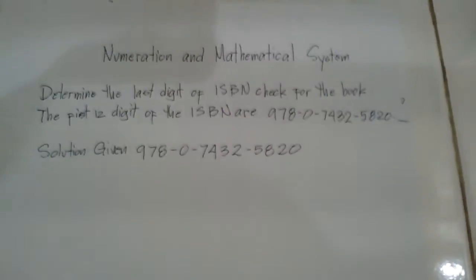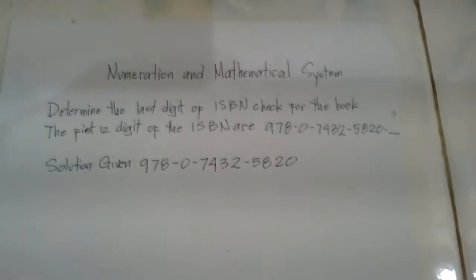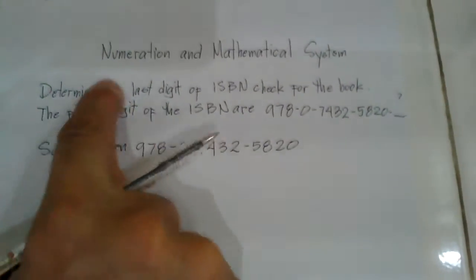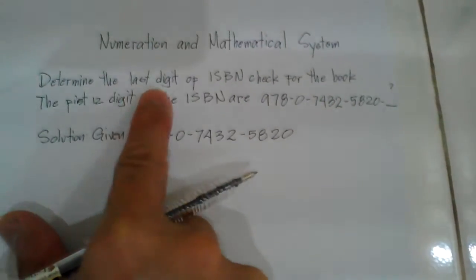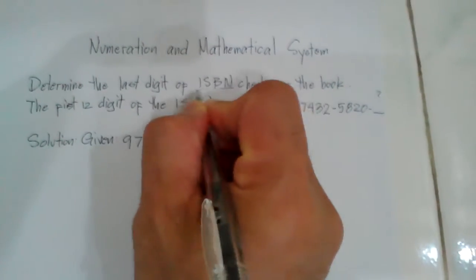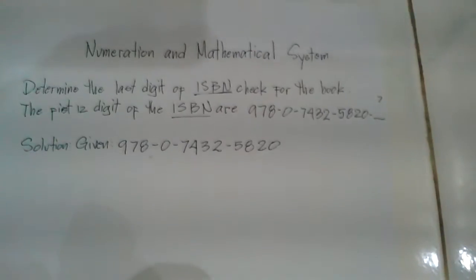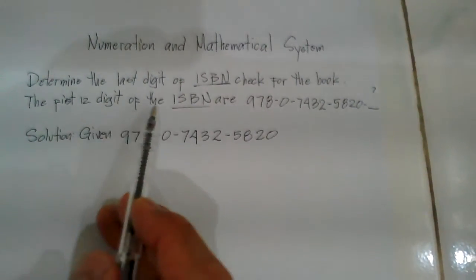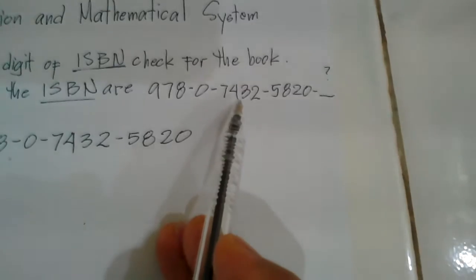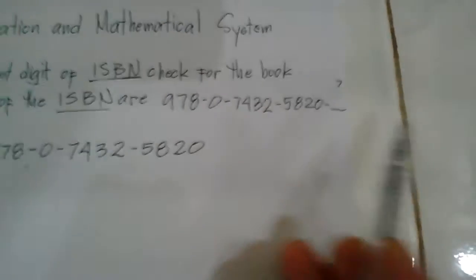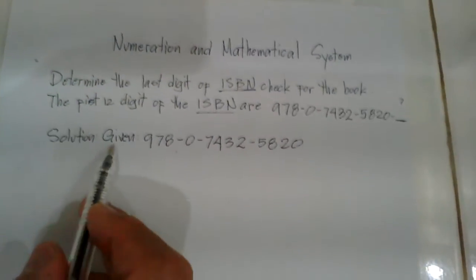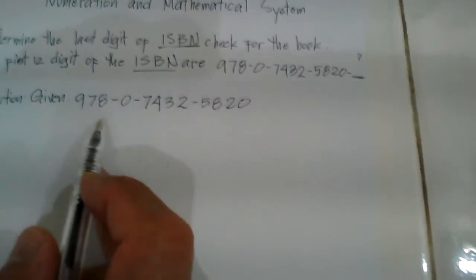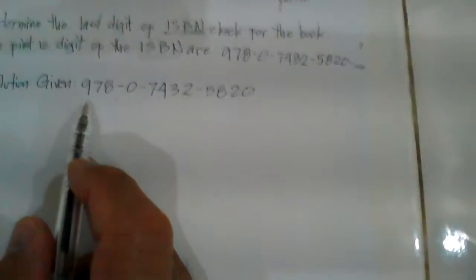Hello there and welcome to my YouTube channel. At this moment we are going to solve a problem in the mathematical system — we need to determine the last digit of an ISBN check digit. The given ISBN is 978-0-7432-5820, and we need to find that final digit. Let's write the given and work through the solution.